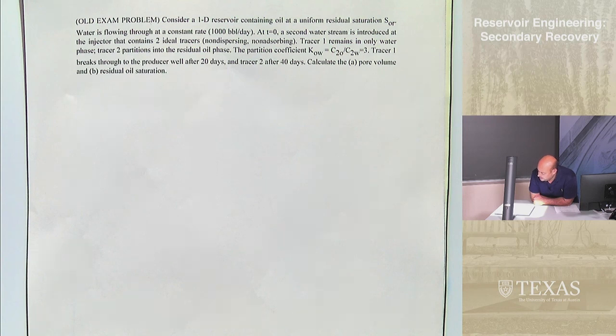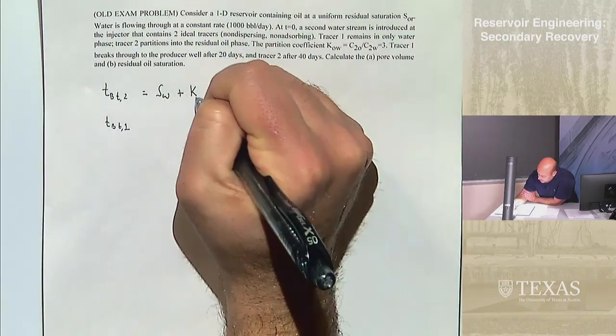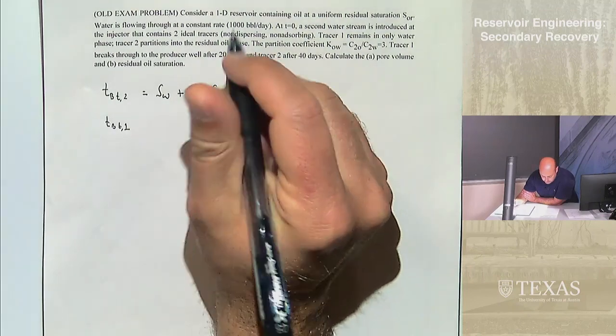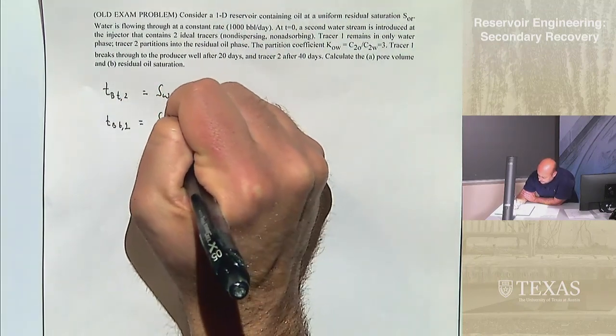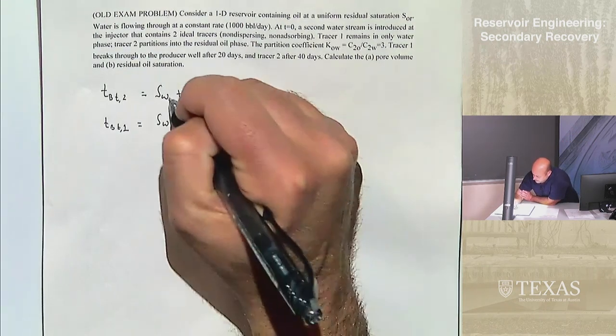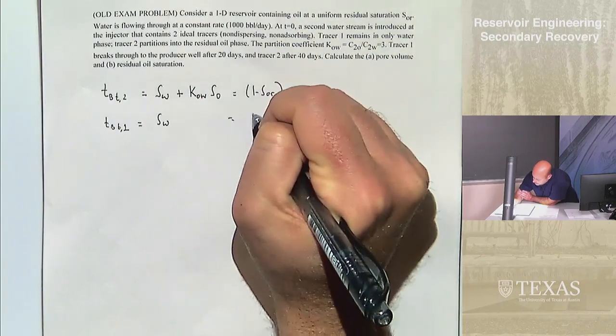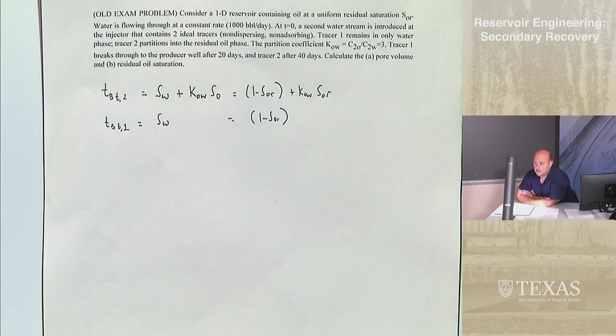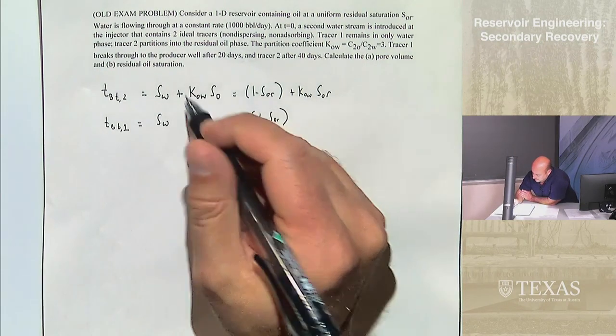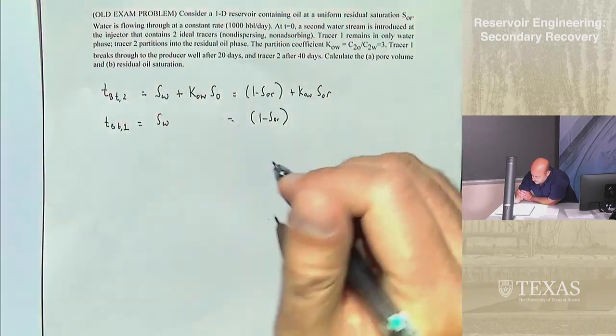What I'll first do is get you to set up your two equations and two unknowns. We wrote that we had SW plus KOW, which is what I called it in this case, times SO. The second one is equal to SW. If I want to write it in terms of SW is one minus SOR plus KOW times SOR and this is equal to one minus SOR.